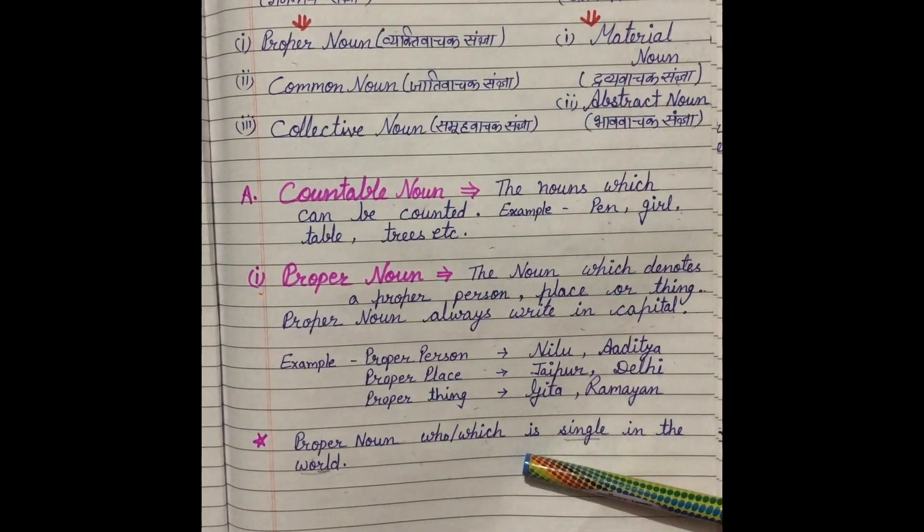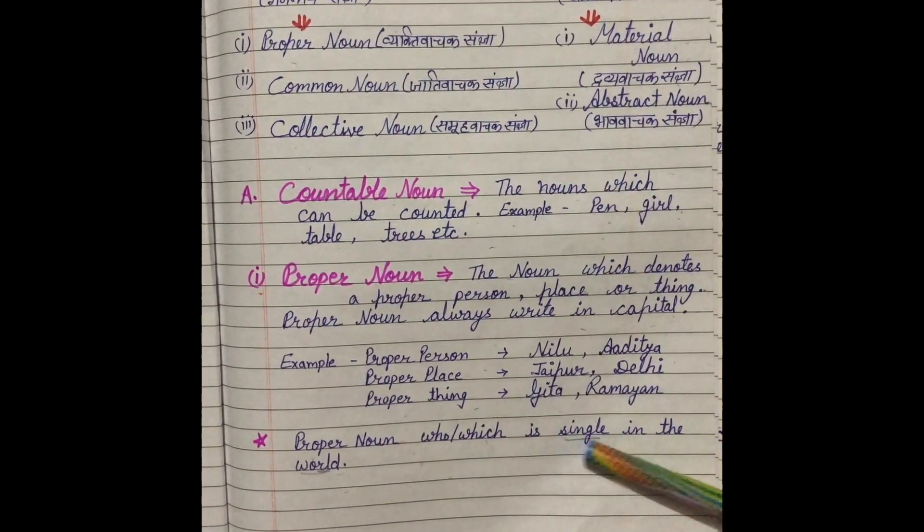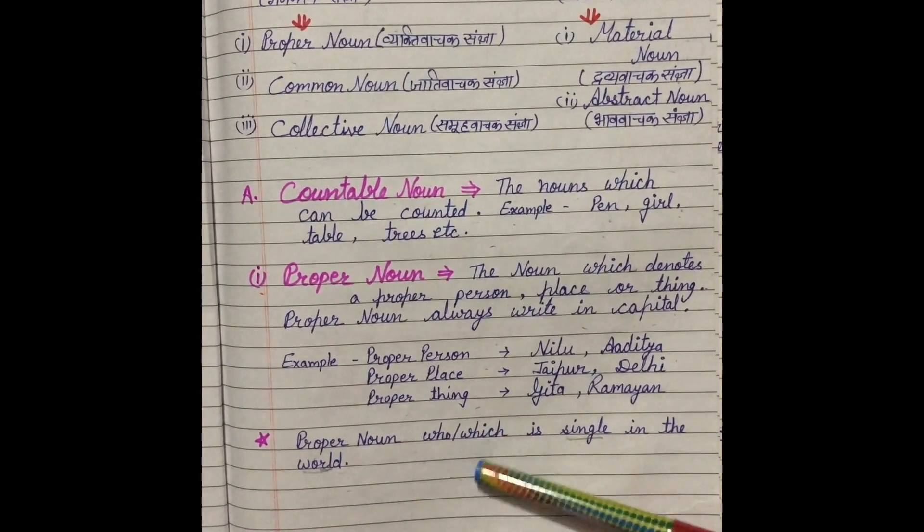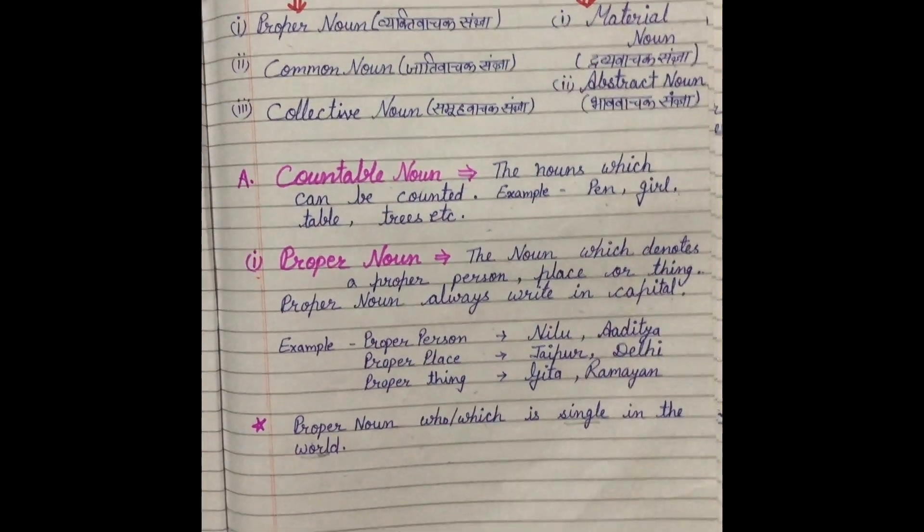Proper noun who and which is single in the world. Jo puri duniya mein ek hi hai, unhi kya kaha jata hai? Proper noun, woh apne aap mein ek hi hai, unique hai. These are called proper noun.